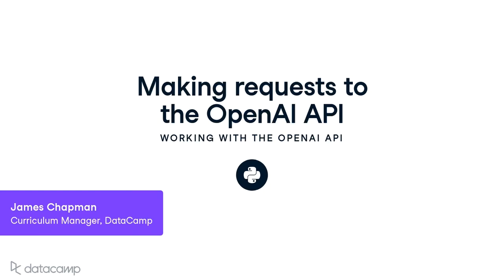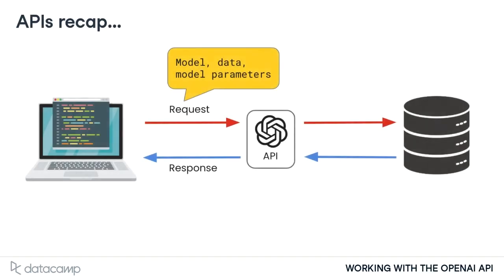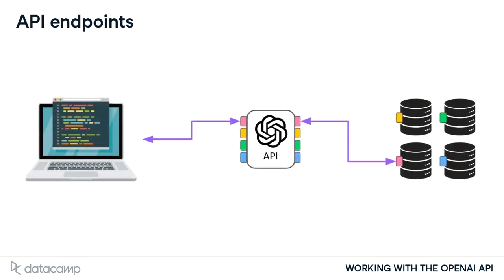In this video, you'll learn to make your very first request to the OpenAI API. Recall that we can request the use of a model from OpenAI by making a request to their API. Depending on the model or services required, APIs have different access points for users. These access points are called endpoints.